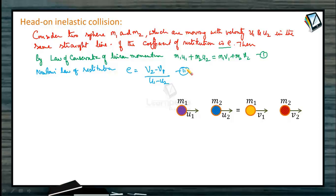So from the first equation and second equation, we can calculate what are the final velocities of both bodies. So from the second equation, we can write v2 is equal to v1 minus e times u1 minus u2. This u1 minus u2, I will bring it over here.